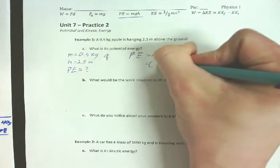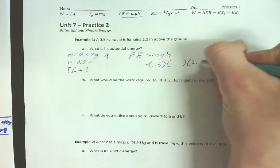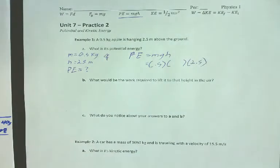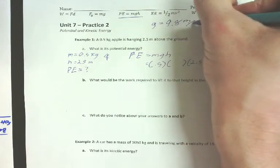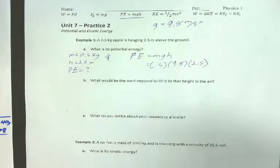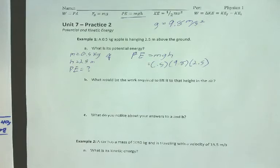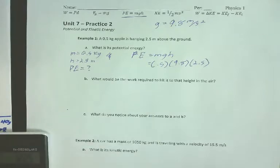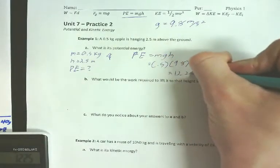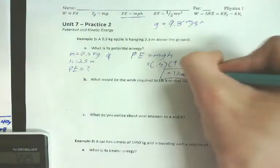Mass is 0.5. It doesn't give me G, so I'll come back to that. H is 2.5. Now, it doesn't give me G, but y'all know what G is. 0.5 times 9.8 times 2.5. 12.25 joules. Nailed it.